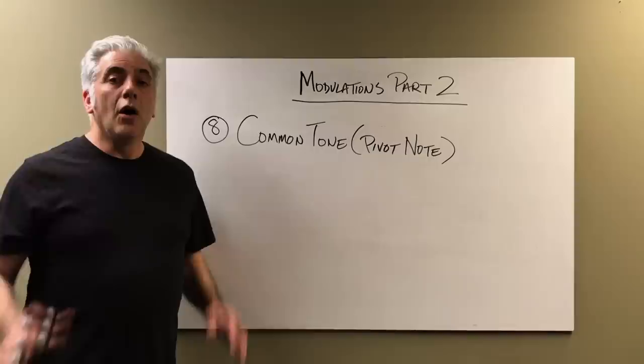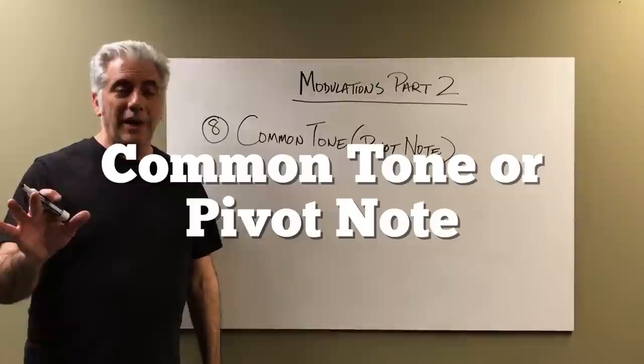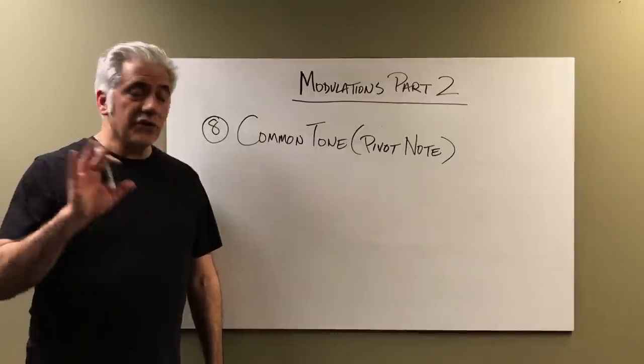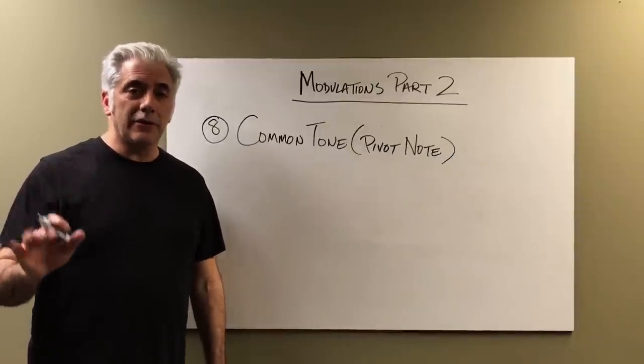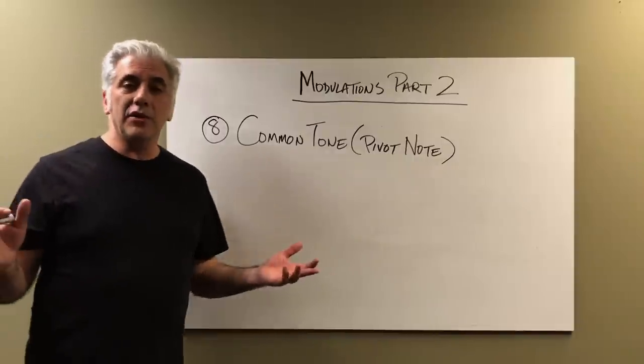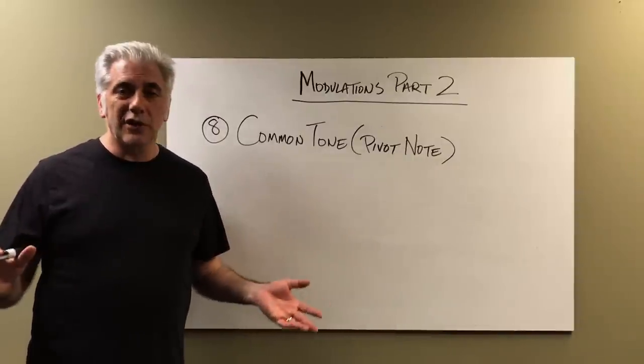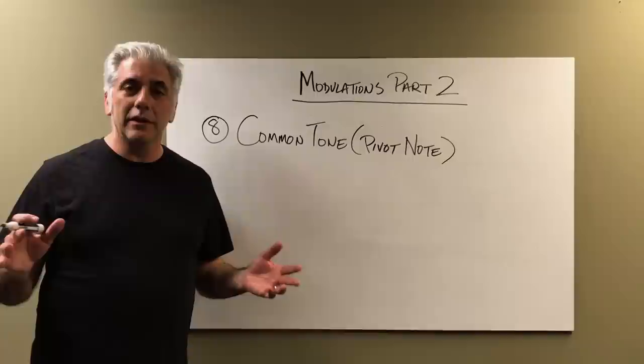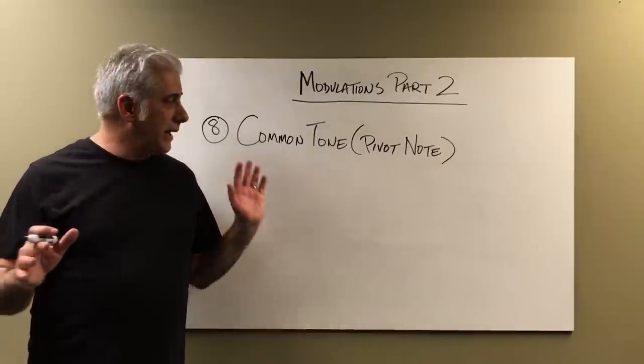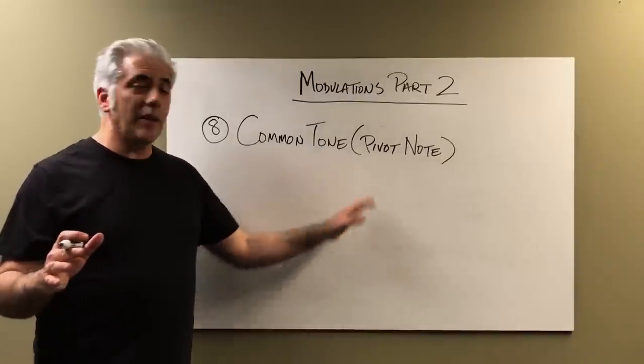Once you memorize that, it's going to give you a lot of options for where to go. This is a great device to use. Watch my episode on chromatic mediant chords. Number eight: common tone or pivot note modulation. This can also include chromatic mediant chords. Anything that has a common note between two keys — even enharmonic — can be used as a common tone modulation.